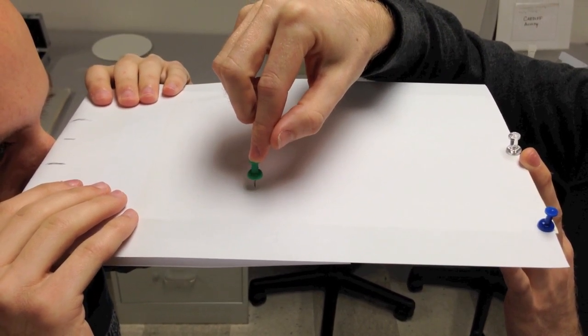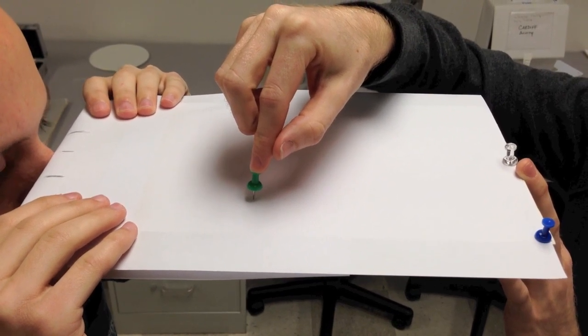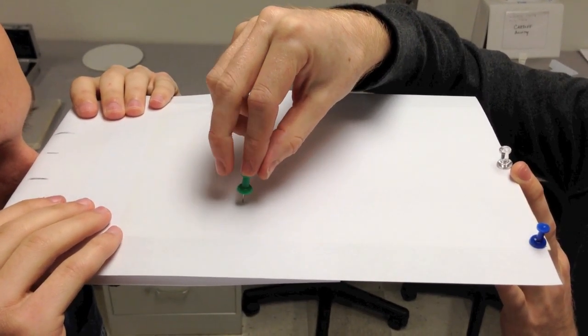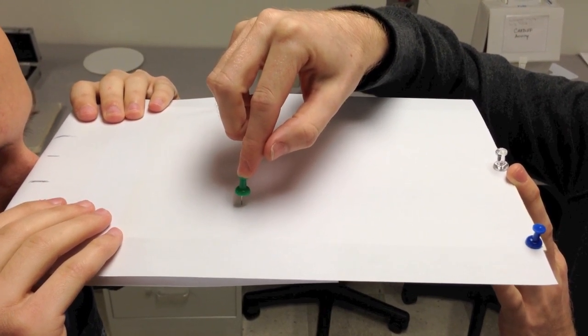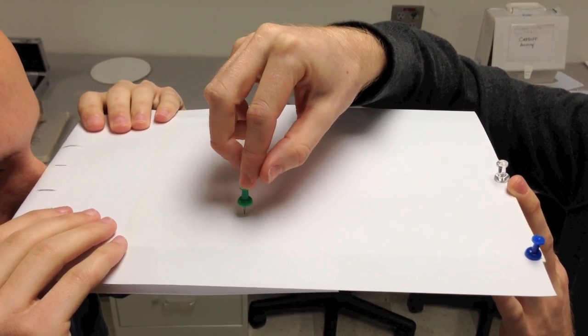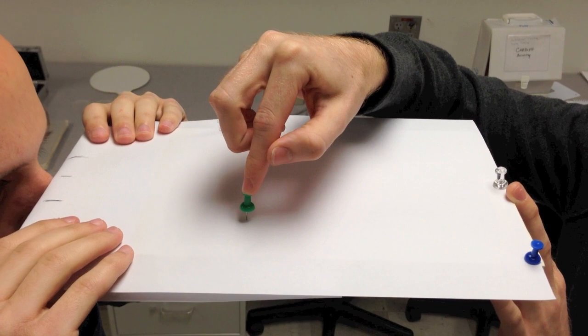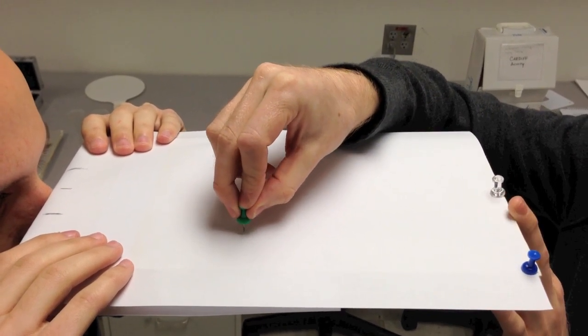The examiner will then move the near pin right or left depending on what the patient tells them to center the distance pin in between the two images of the near pin. What do you say, Taylor? You need to move the near one a little to the left. A little bit more. That's about perfect. And then you push it in.